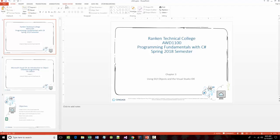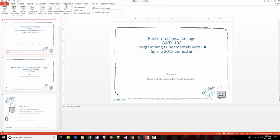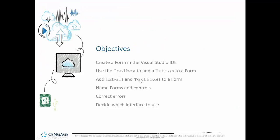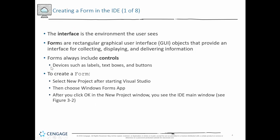The previous chapter was basically doing things from the command line, and now we're not doing that. We want to be able to create a form in the Visual Studio IDE, use the toolbox to add a button to a form, use labels and text boxes, name forms and controls, correct errors, and decide which interface to use.